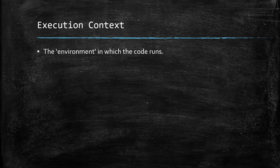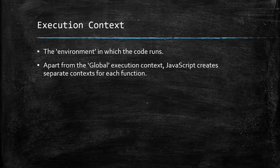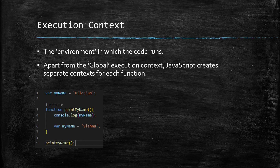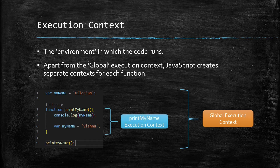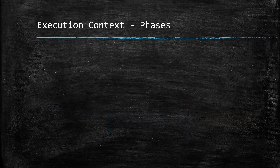Execution context is the environment in which JavaScript code runs. Apart from creating the global execution context, the JavaScript engine also creates a dedicated, separate execution context for each function. In our code, when the 'printMyName' function is invoked on line nine, that function invocation gets its own dedicated individual execution context.